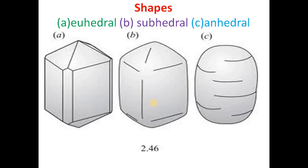Coming to the shape of a crystal or mineral, we usually say euhedral, subhedral, and anhedral. In the case of euhedral, we can see the faces and how they are developed. If there is no face at all, it is called anhedral. Sometimes a crystal is developed partially with faces — in such a case, it is called subhedral. Hence, shapes of a mineral may be either euhedral, anhedral, or sometimes subhedral.